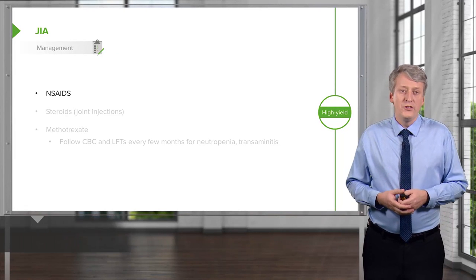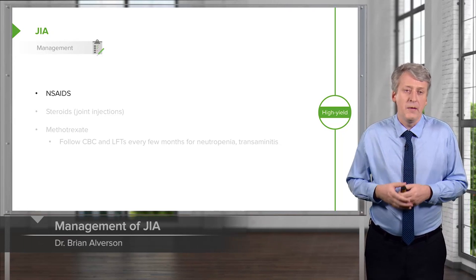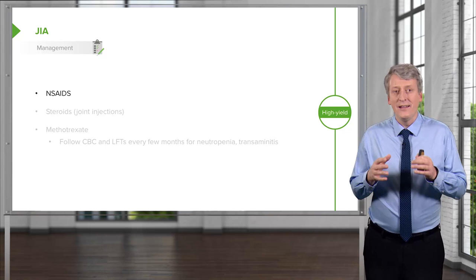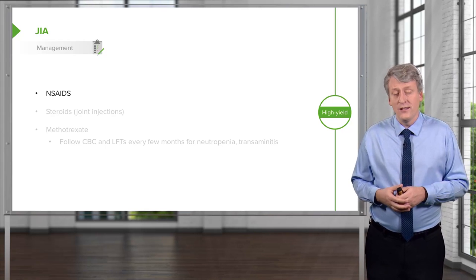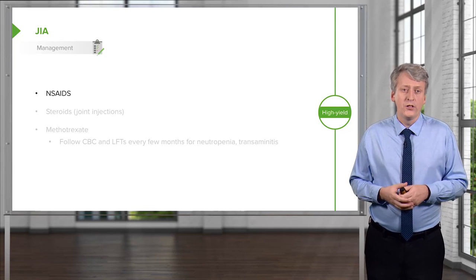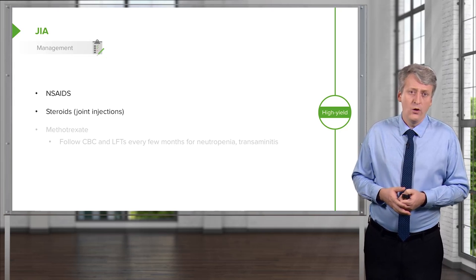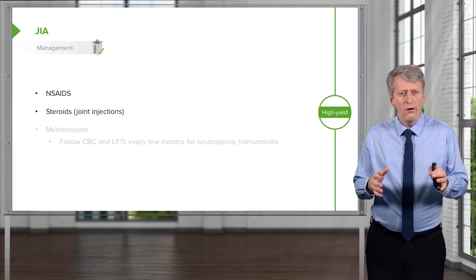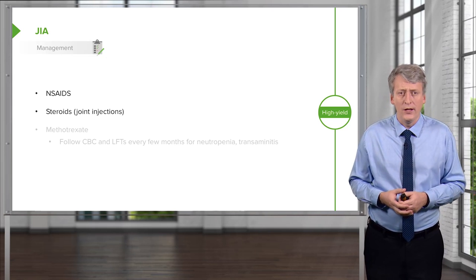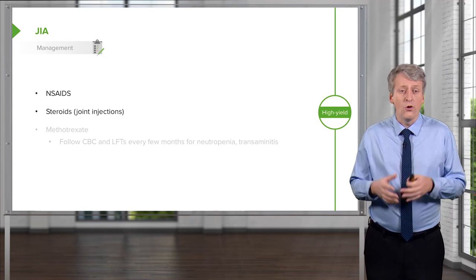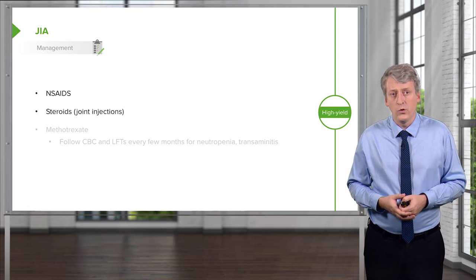The management of JIA is mostly around restricting inflammation in these patients. The first line of therapy is NSAIDs. We will usually use long-acting NSAIDs like naproxen to control the swelling and pain. If naproxen isn't doing the trick, we may do joint injections or rarely systemic steroids in a particularly bad inflammatory period. Injected steroids are a good temporizing measure for any joint that's having a significant inflammatory process.